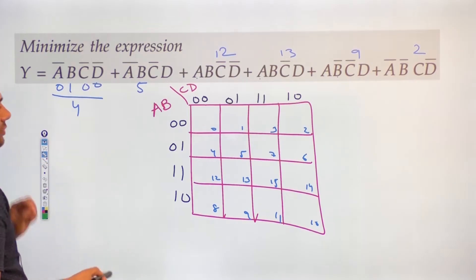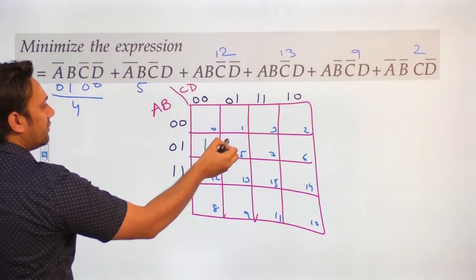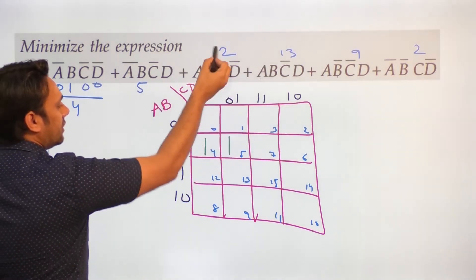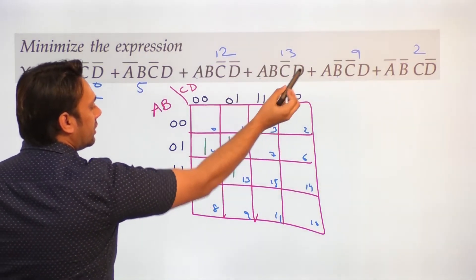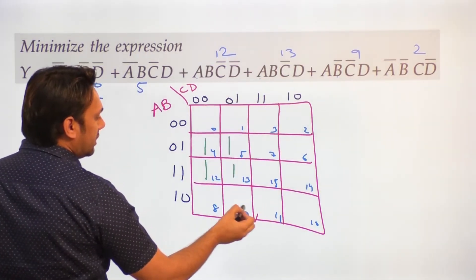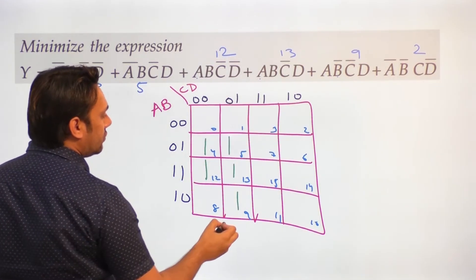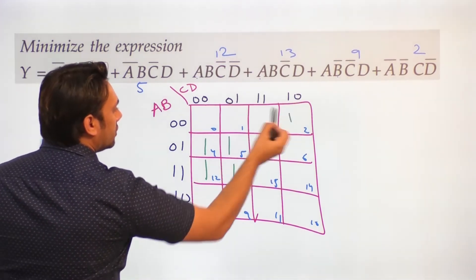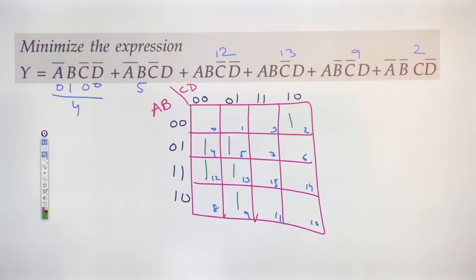So that means these locations are having 1. We have 1 at location 4, 1 at location 5, 1 at location 12, 1 at location 13, 1 at location 9, and 1 at location 2. These are the locations where we have 1.